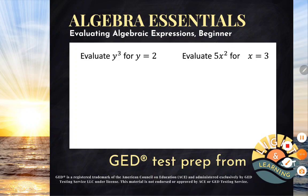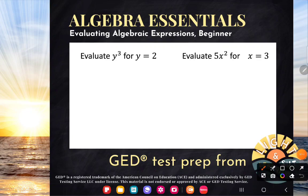It says evaluate y cubed for y equals 2. Mystery solved. All right. Y is not some unknown freaky thing that you don't know about that you don't understand. Y is 2. That's what that equal sign means. And so the very first thing we can do is we can replace y with a 2.